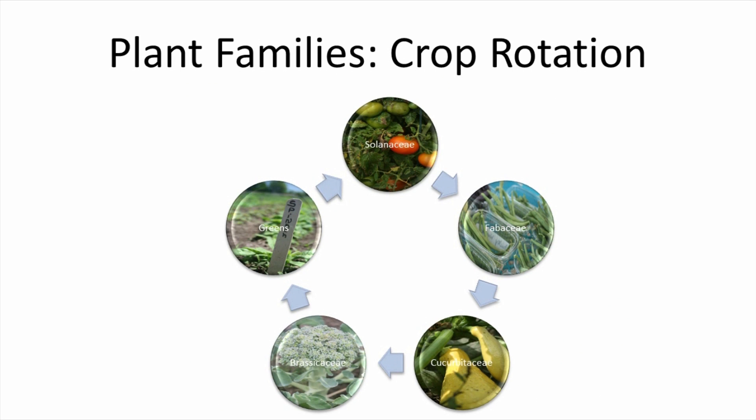In the vegetable garden, do you rotate through your tomatoes and peppers, cool crops, cucumbers, and melons, planting each in a different spot in the garden each year? In doing so, you're rotating different plant families in order to avoid pest outbreaks.